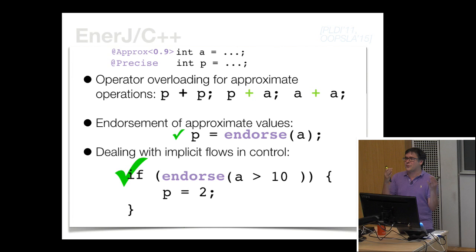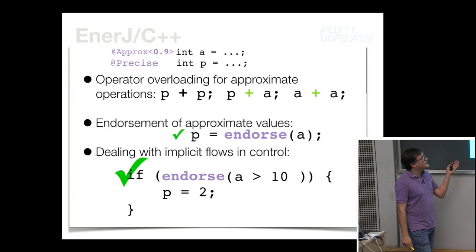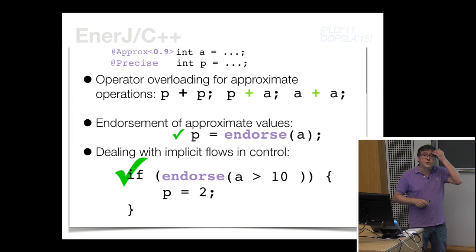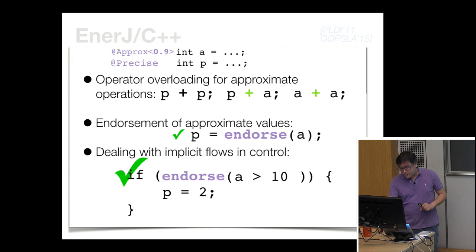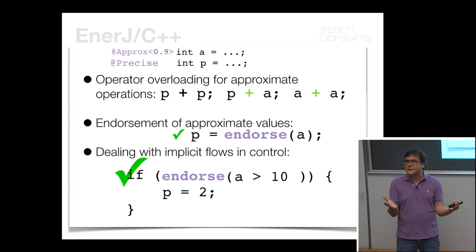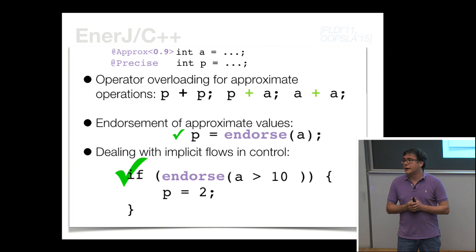We can actually make approximation continuous — it's not just a binary thing of either approximate or precise; you can see how approximate it is. We've written a bunch of code using this model, and there's a whole infrastructure available on GitHub that people are using. This is the programming model for approximate computing — very simple, but it works well.